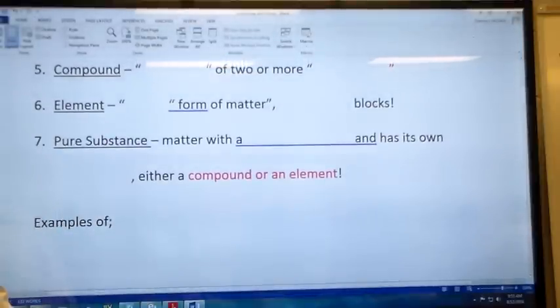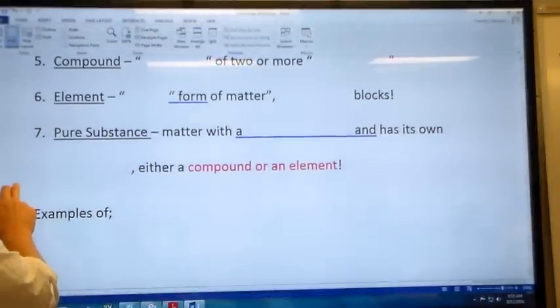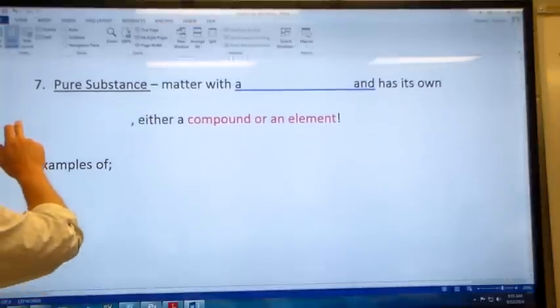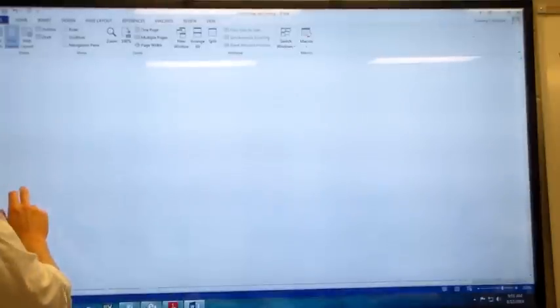Compounds that may show up on the quiz are things like sodium chloride, NaCl, or carbon dioxide. A compound or element will always be listed on the quiz with either a symbol or a formula.